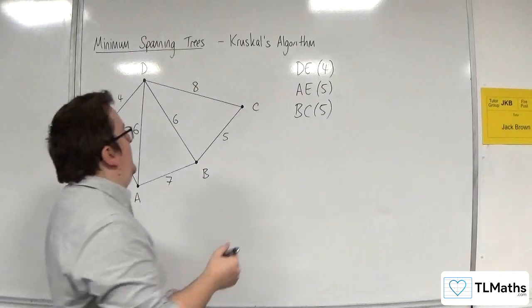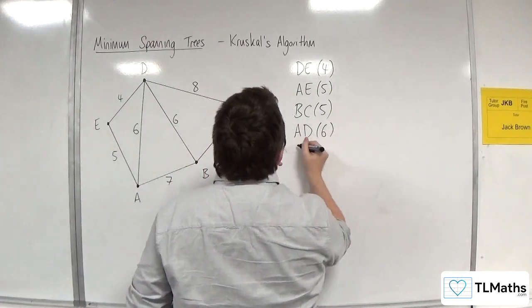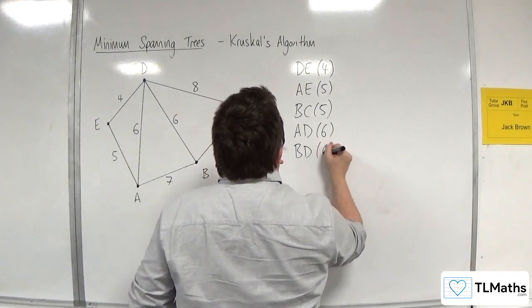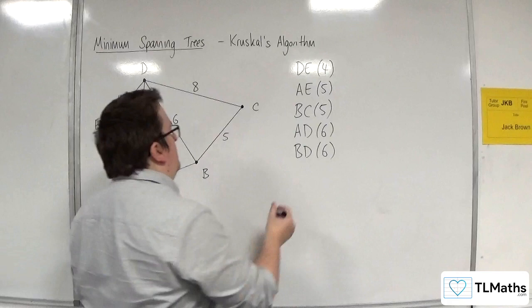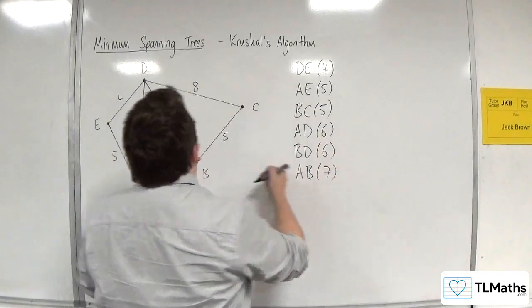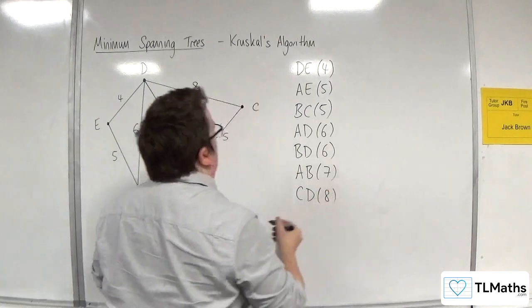Then we've got sixes. So we've got AD and BD. Again, doesn't matter which way around I write those. And then we've got the seven, so AB is seven. And then we've got the eight CD.